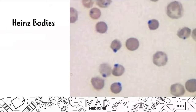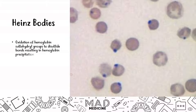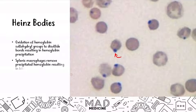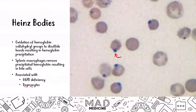Heinz bodies are abnormal precipitations of hemoglobin because of a sulfhydryl group being oxidized to the disulfide bond. The splenic macrophages are going to remove them, which leads to a degmosite. This is associated with G6PD deficiency. If you see a red blood cell with a little blue condensation, that is the hemoglobin precipitating — that is what we call a Heinz body.